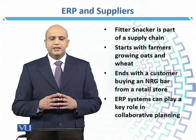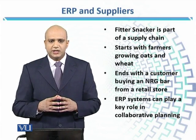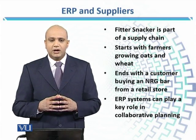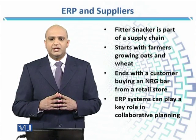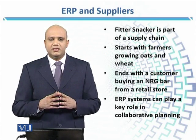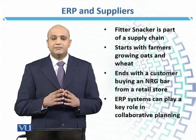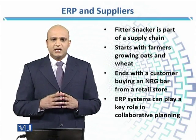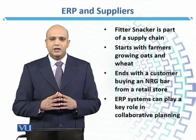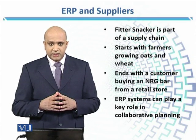You will be thinking, what is the information necessary that the farmer has? It is critical information. Because of any weather condition, if the farmer doesn't produce anything, then definitely whatever plan you have made for next month or next year, it will be disturbed. So information is very critical. And it ends with a customer buying an energy bar from a retail store.